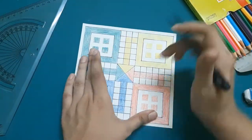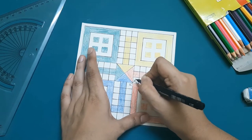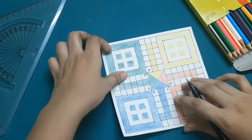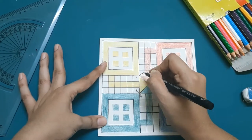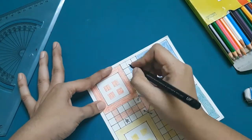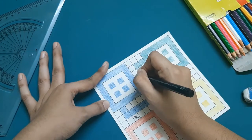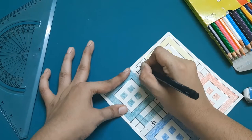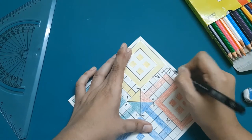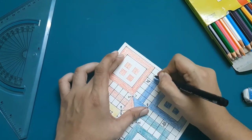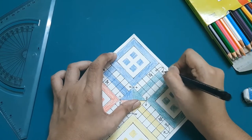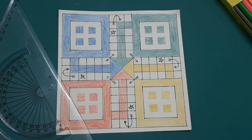Now, with the help of a marker, I am going to make the markings which you find on the Ludo board, basically the arrows that you see. So that completes my Ludo board. This is how it looks.